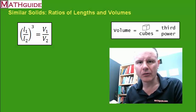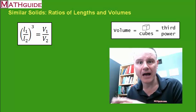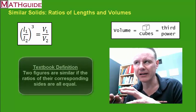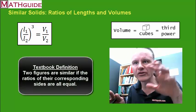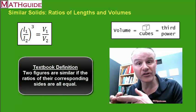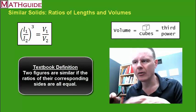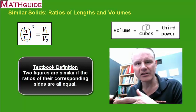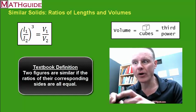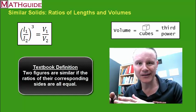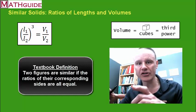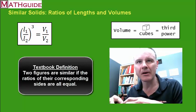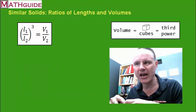Let's start with the term 'similar.' What are solids that are similar? If you took two solids and one was the shrunken version of the other, or one was the enlarged version of the other, we would say they're similar because their lengths are all in the same proportion. It's like taking a photo — if you enlarge it, all the distances are expanded by the same fraction or the same ratio.